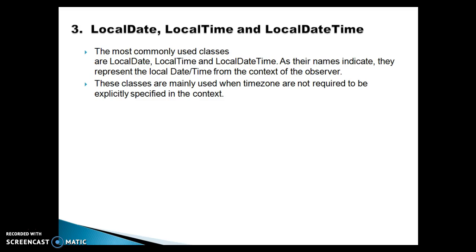Working with dates in Java used to be hard. The old date library provided by the JDK included only three classes: java.util.Date, java.util.Calendar, and java.util.Timestamp. These were only suitable for the most basic tasks. For anything even remotely complex, the developer had to either use third-party libraries or write tons of custom code. Java 8 introduced a completely new DateTime API, available in the java.time package, loosely based on the popular Java library called Joda-Time.